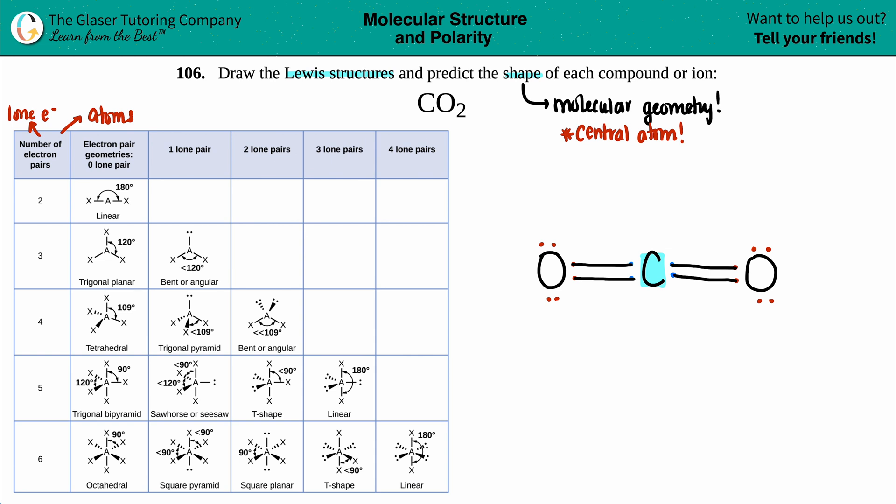In this case, what do I have? I have an oxygen that is bound to the carbon and I got another oxygen that's bound to the carbon. So this carbon, the central atom, has two atoms. Does it have any lone pairs? No, I don't see any dots. I can't count these dots because that's not the central atom. So I have two atoms and zero lone pairs.